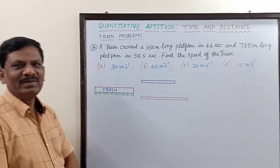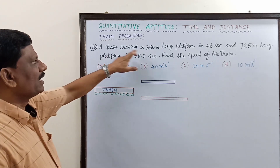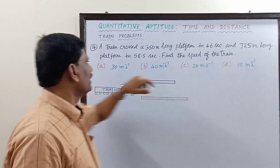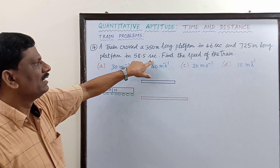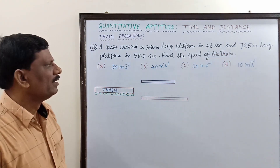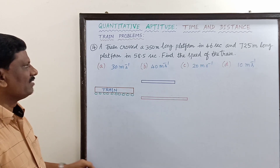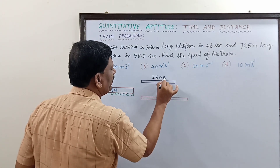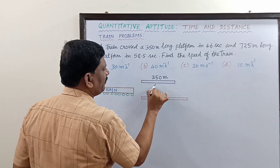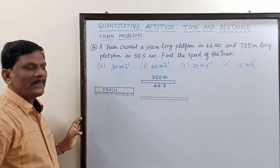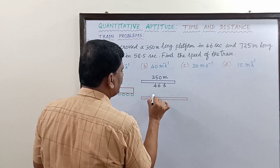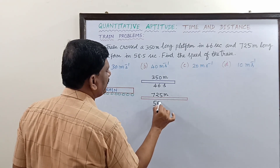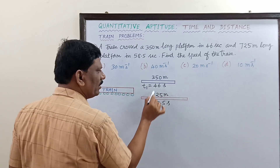Problem number 14: A train crossed a 350 meter long platform in 46 seconds and a 725 meter long platform in 58.5 seconds. Find the speed of the train. There are two platforms — the shorter one has a length of 350 meters and is crossed in 46 seconds (t1 = 46), and the longer one has a length of 725 meters and takes 58.5 seconds (t2 = 58.5).